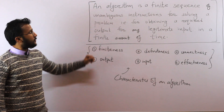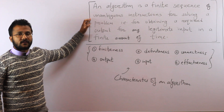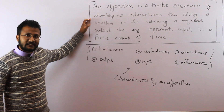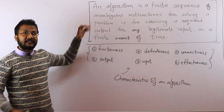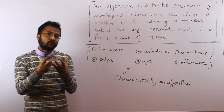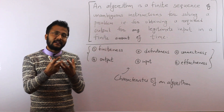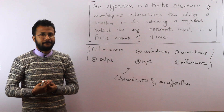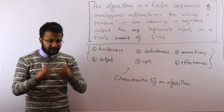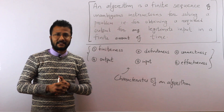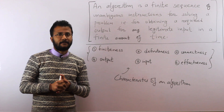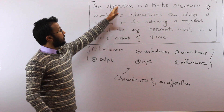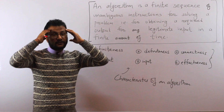An algorithm is a finite sequence of unambiguous instructions for solving a given problem — that is, finding the output for all legal inputs that are provided. Let us try to understand this definition in detail.